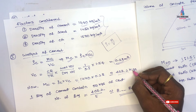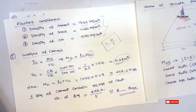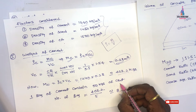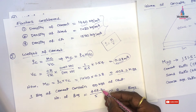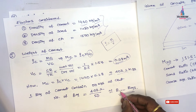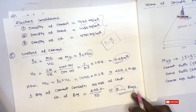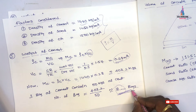For the conversion: one bag of cement contains 50 kg. So the number of bags required equals 403.2 kg divided by 50, which equals approximately 8 bags. For casting this one cubic meter volume of slab, 8 bags of cement are required.